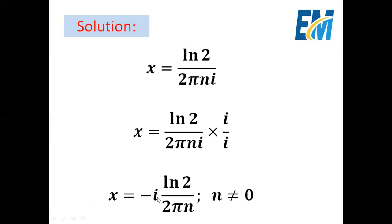Therefore x equals minus i multiplied by ln 2 all over 2πn, where n is an integer different than 0.